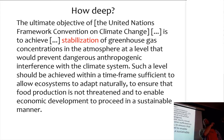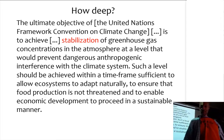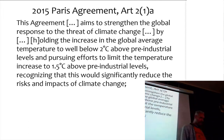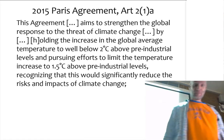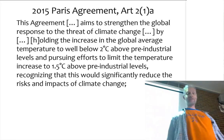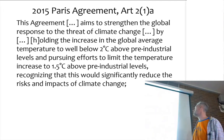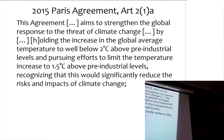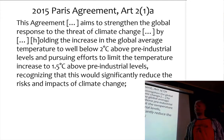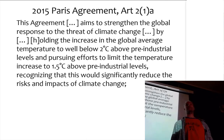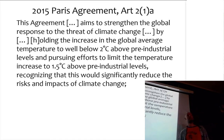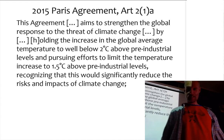The UNFCCC says that emissions have to go to zero, but doesn't say when. The Paris Agreement does. Article 2 of the Paris Agreement puts numbers on this: holding the increase in global average temperature to well below 2°C above pre-industrial levels, and pursuing efforts to limit the temperature increase to 1.5°C — recognizing that it would significantly reduce the risks and impacts of climate change. So now we have a target: not only must emissions go to zero, but they must do so at such a point that temperature stabilizes below 2°C, preferably near 1.5°C.